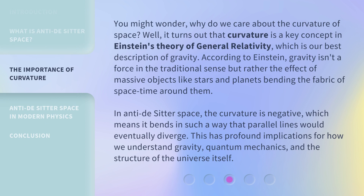You might wonder: why do we care about the curvature of space? Well, it turns out that curvature is a key concept in Einstein's theory of general relativity, which is our best description of gravity. According to Einstein, gravity isn't a force in the traditional sense, but rather the effect of massive objects like stars and planets bending the fabric of space-time around them. In Anti-de Sitter space, the curvature is negative, which means it bends in such a way that parallel lines would eventually diverge. This has profound implications for how we understand gravity, quantum mechanics, and the structure of the universe itself.